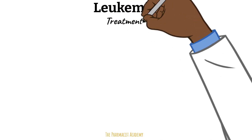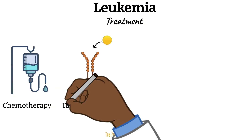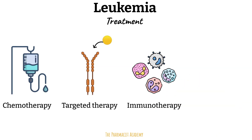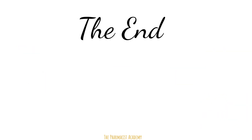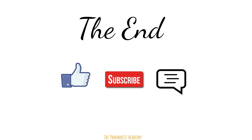For leukemia, treatment includes chemotherapy, targeted therapy, and immunotherapy — which makes the immune system smarter and stronger so it can fight the cancer on its own. Patients may also receive stem cell transplants. I hope this clarified the differences between lymphoma and leukemia. If you learned at least one thing, please hit the like button, subscribe, and leave your questions below. Thank you for watching.